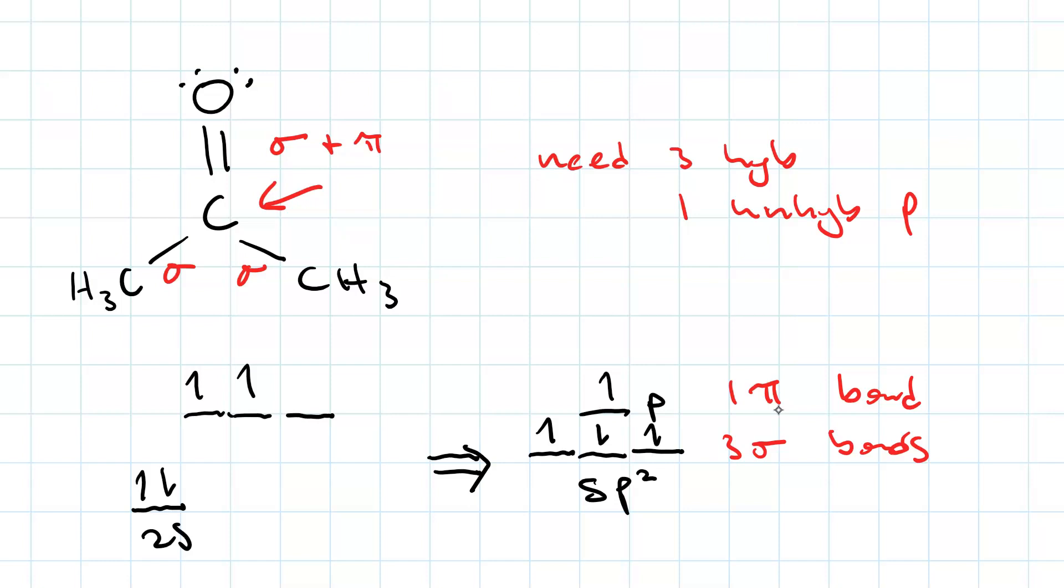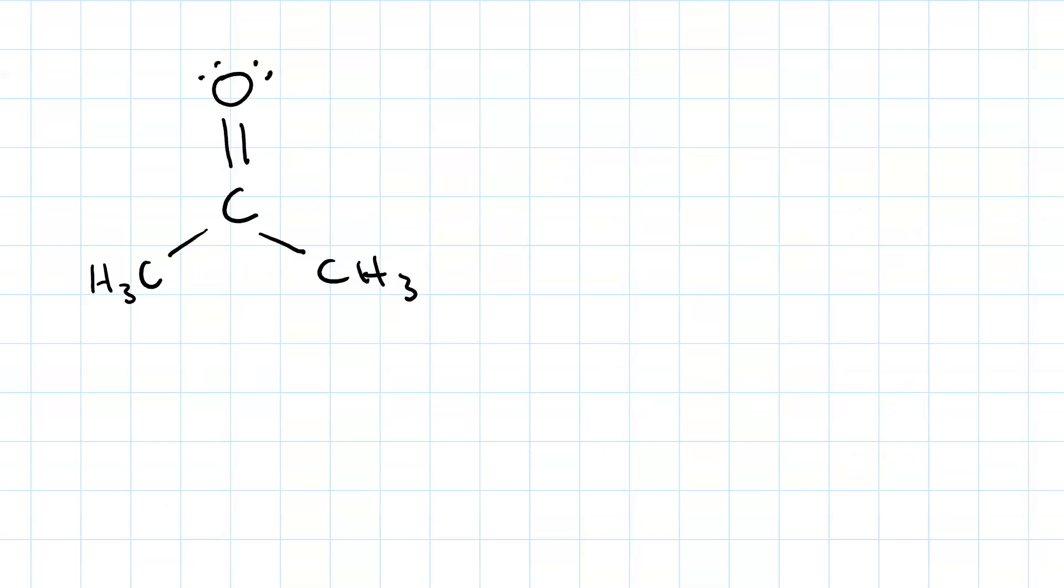Now let's look at oxygen. The oxygen has a double bond, which is a sigma and a pi, and then it's got two lone pairs. Lone pairs go in sigma orbitals. So we need three sigma orbitals, or three hybrid orbitals, to make the sigmas, the bond in the two lone pairs. And we need one unhybridized p orbital. And that'll give us the pi bond.